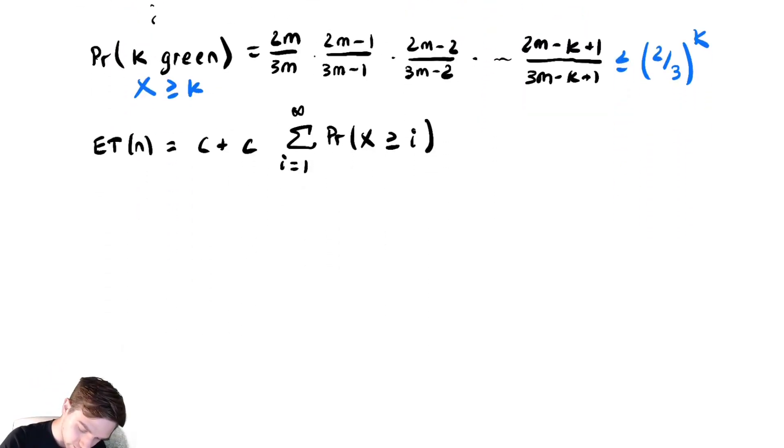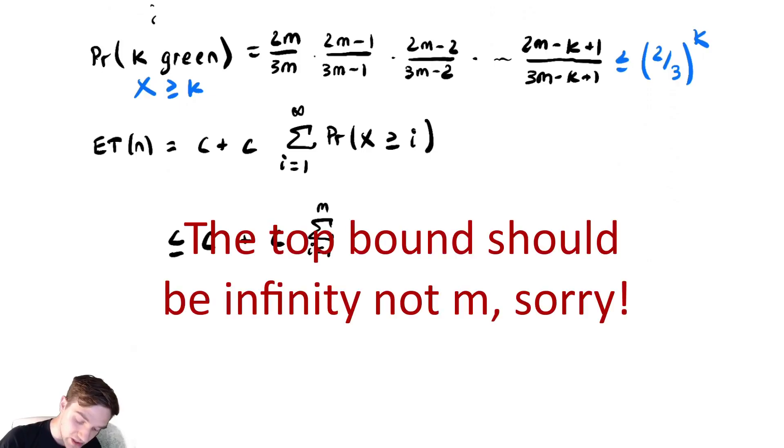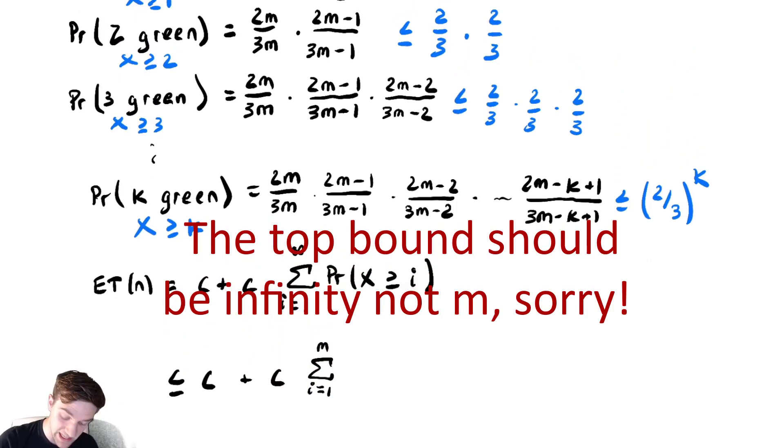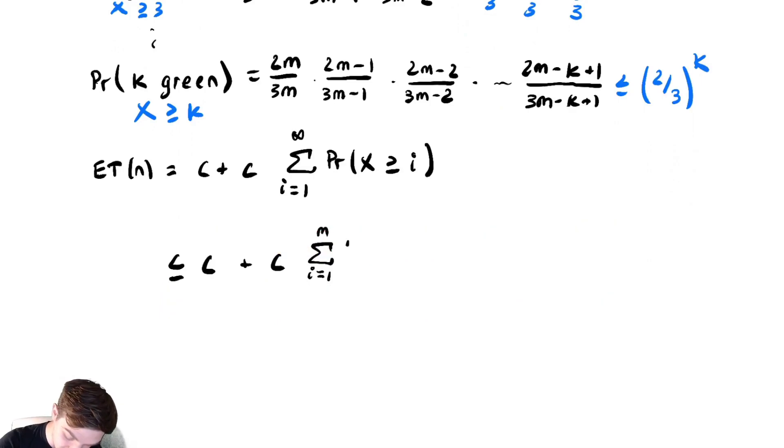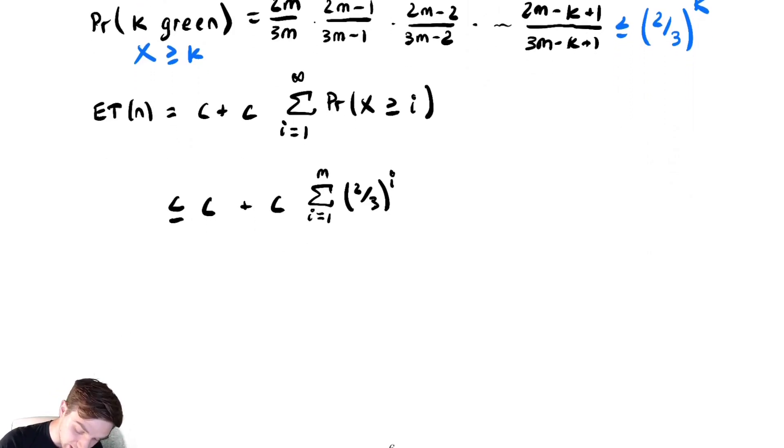So we have c plus, but I can't say it equals here. This is unfortunate, so instead we've abandoned hope of that, and we've just tried to bound it above. And if we're bounding it above, we know there's nice upper bounds. It was x greater than or equal to k was two-thirds to the k, which makes this two-thirds to the i.